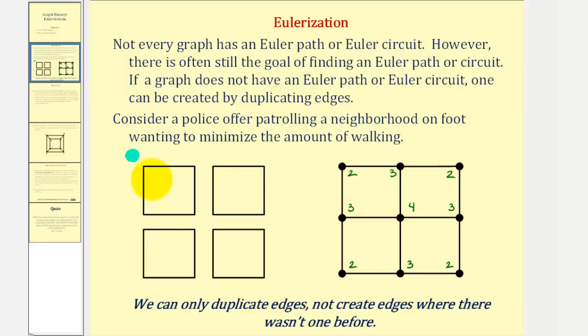Which means in order to patrol the neighborhood, the officer is going to have to duplicate his efforts and walk down certain streets more than once. Now to create an Euler circuit, we'll duplicate edges so all the degrees are even.